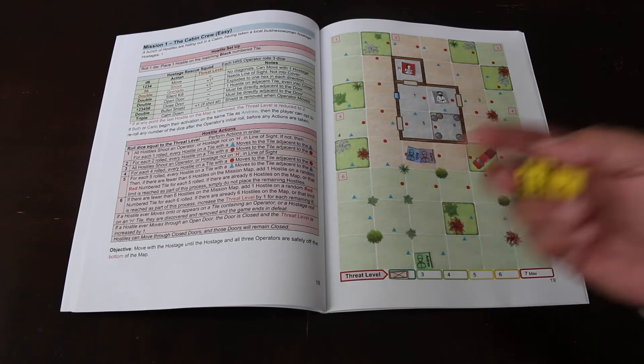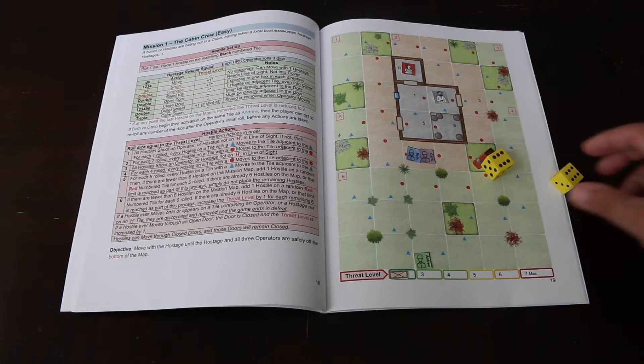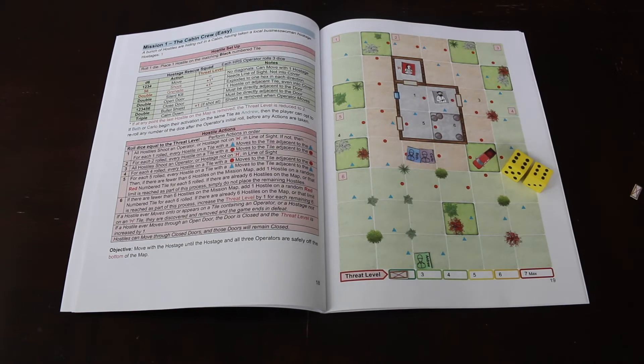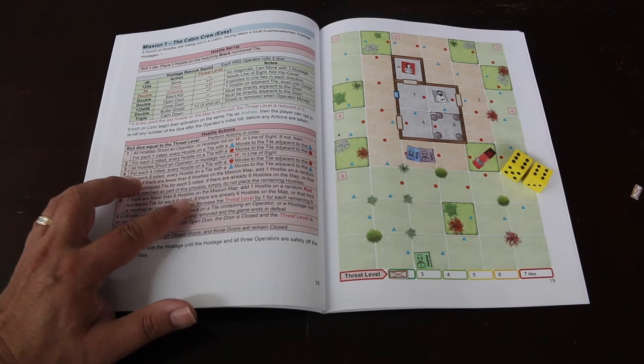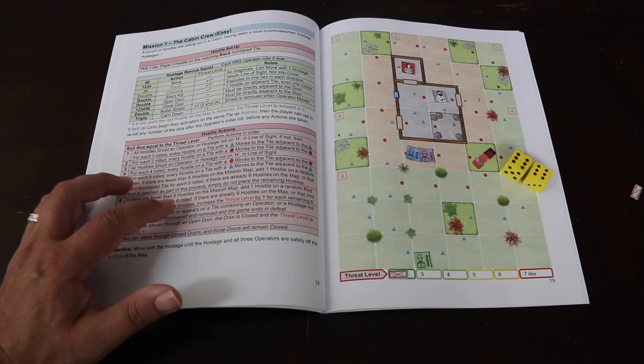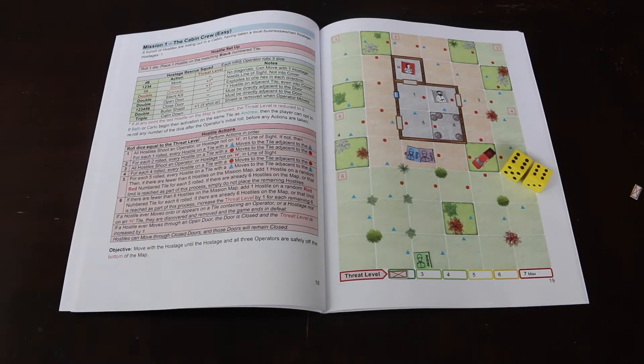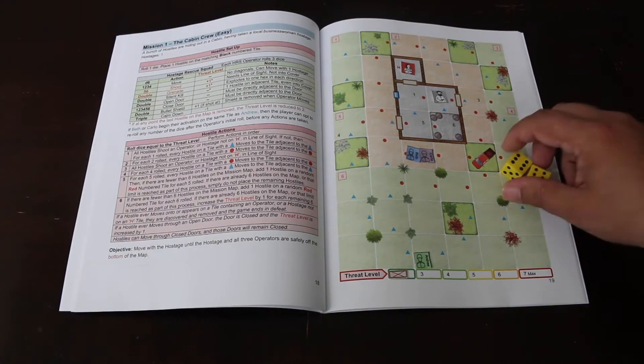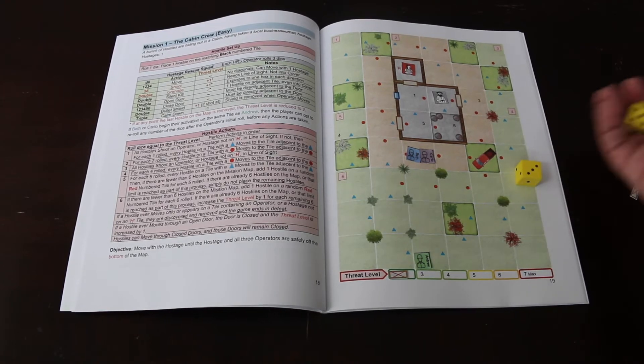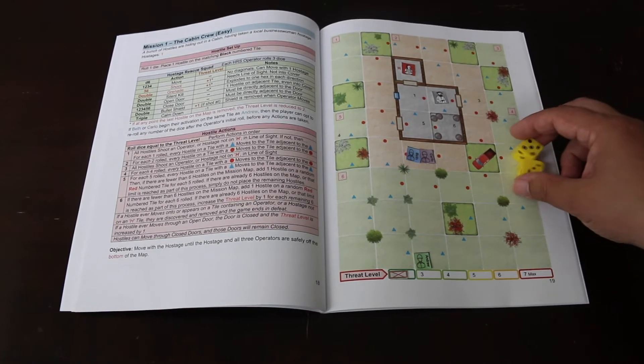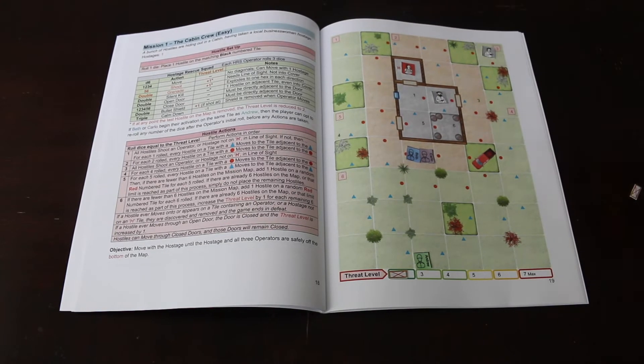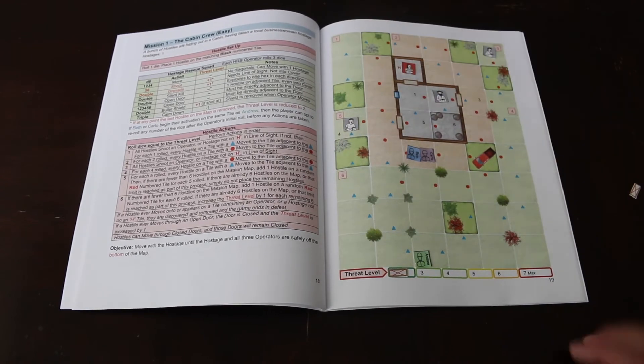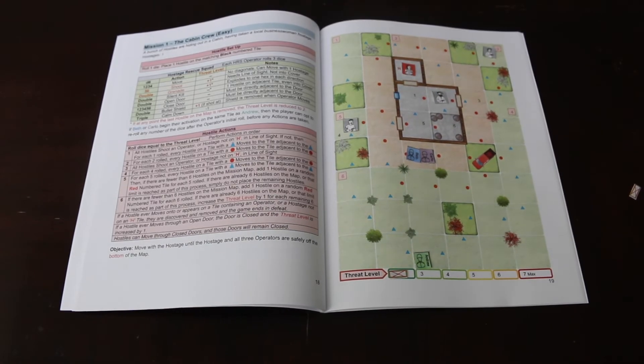Now for the bad guys. They start with a threat level of two. There's an actual threat level marker, I just can't find it - I think I lost it. That means bad guys will roll two dice. They roll a six and a six. If there are fewer than six hostiles on the map, add one hostile at a random red location for each six rolled. First bad guy will go at three, next bad guy will go at five. Red three is here, and red five is here.